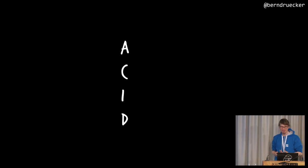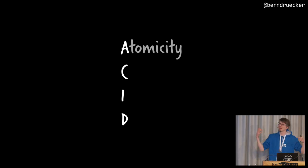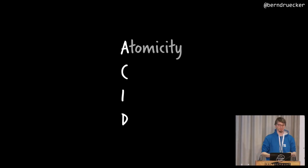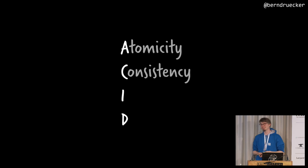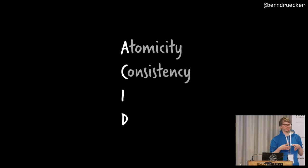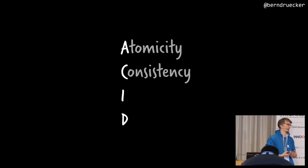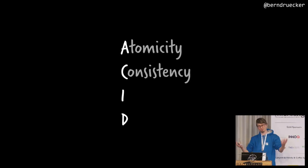I want to talk about ACID transactions. Who knows what ACID stands for? A is for atomicity — that's all or nothing. It's atomic: I do either everything or nothing. Then consistency — it's often confusing here, but it's more about the database always being consistent to certain invariants, like non-null constraints and foreign keys.